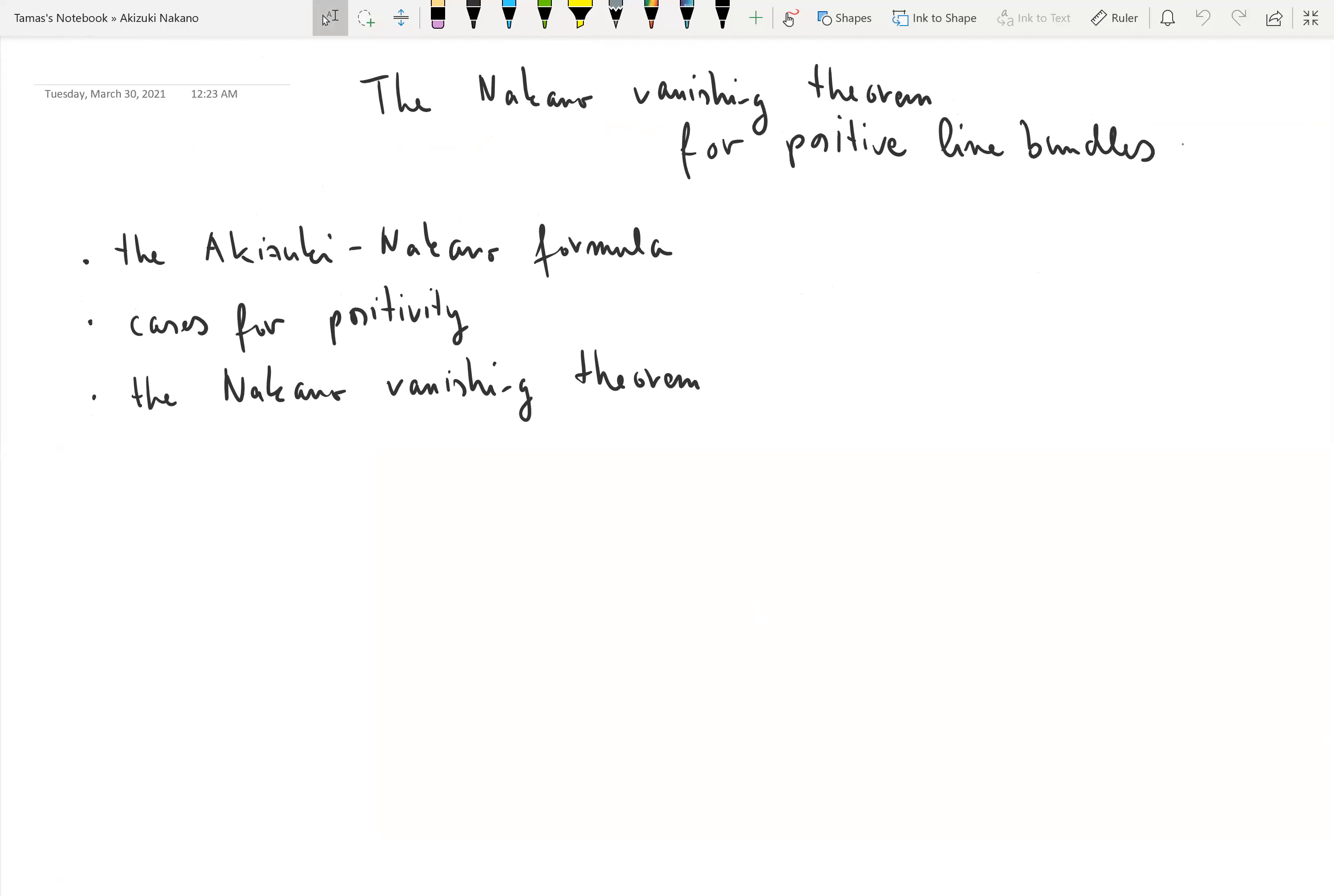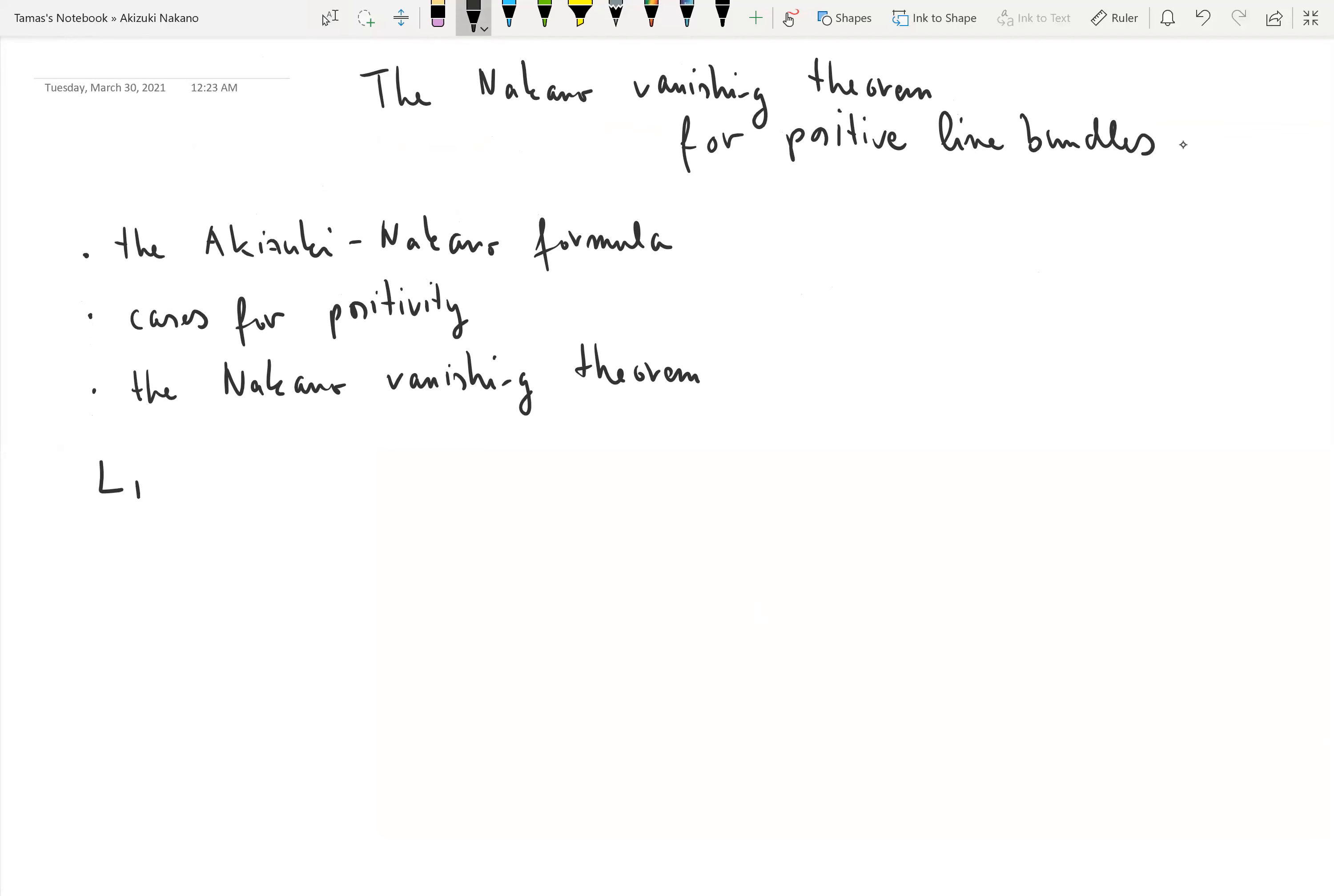The setting for us will be a Hermitian line bundle (L,h) on X, where X is a compact Kähler manifold.